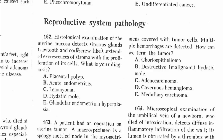Question 162: Histological examination of the uterine mucosa detects sinuous glands and corkscrew-like extended excursions of the stroma with proliferation of its cells. The diagnosis is hyperplasia of the endometrium, therefore called glandular endometrial hyperplasia. The answer is E.